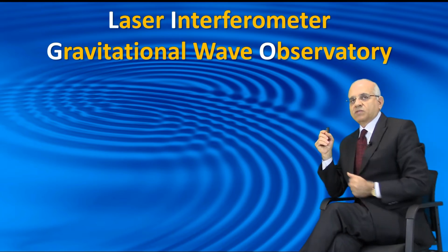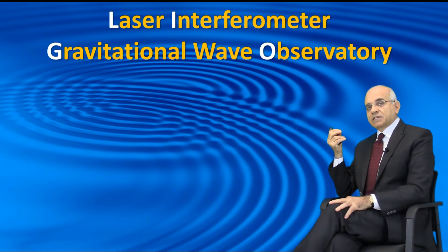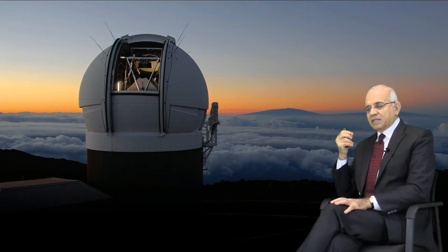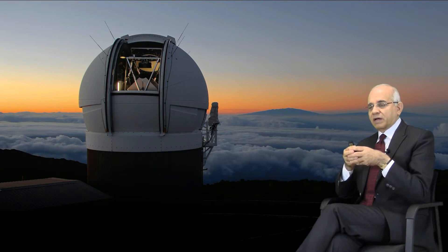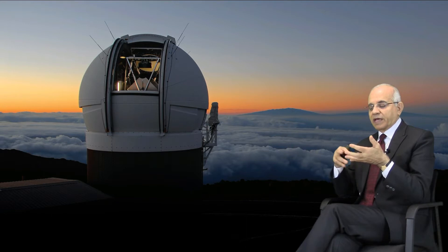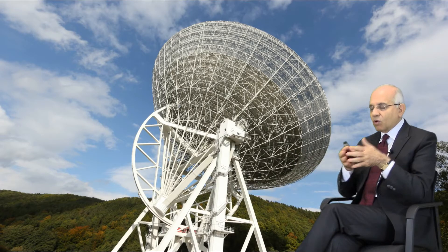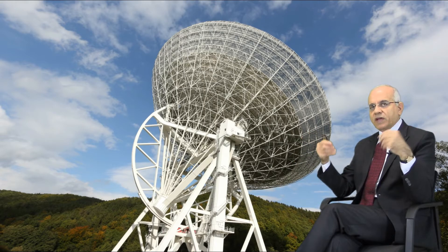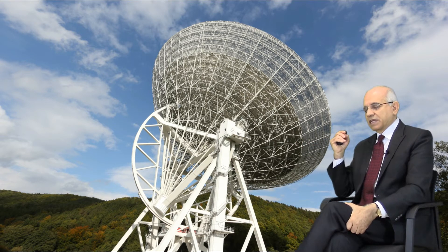Let's start with the word observatory. In astronomy in general, we use observatories to look for light or electromagnetic spectrum in space — visible light, gamma rays, x-rays, ultraviolet, infrared, microwave, or radio waves. The whole spectrum is full of different kinds of waves, and we have different observatories that look for different parts of the electromagnetic spectrum.